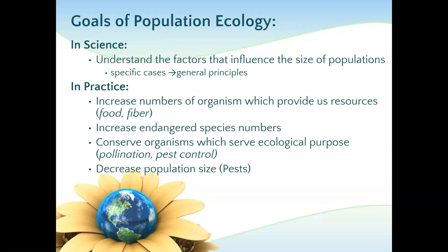The goal for population ecology — why would you study it? What do population ecologists do? They're probably looking at specific cases. Maybe they're trying to bring back numbers that have declined. Maybe there is a need for the organism for food, fiber, medication, or any of that sort of thing. So they're looking at specific cases and applying general principles that can typically be applied to any population. Organisms that provide us with resources — we want to understand them better so we can support them.